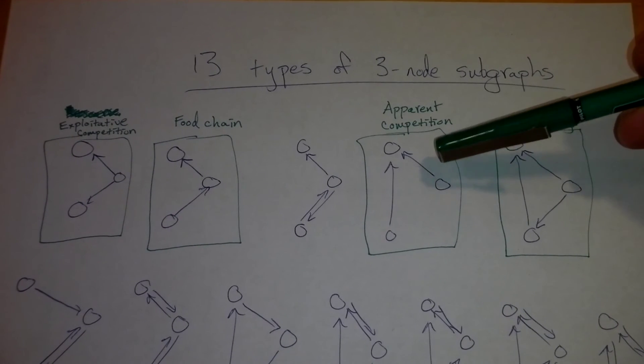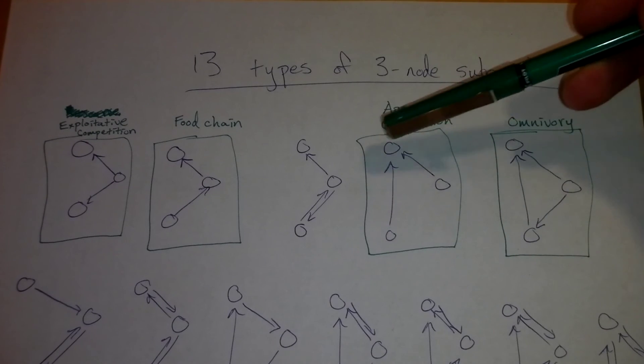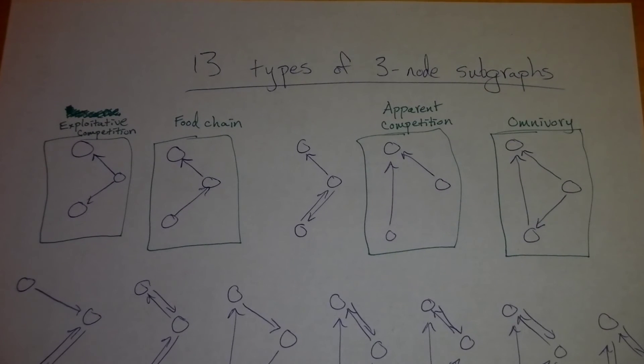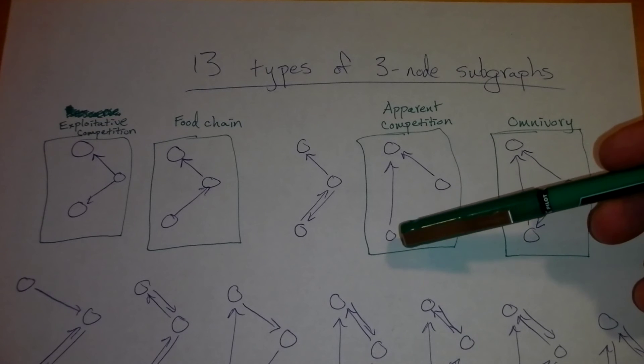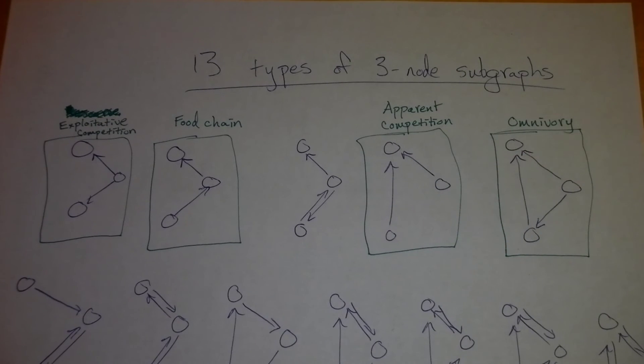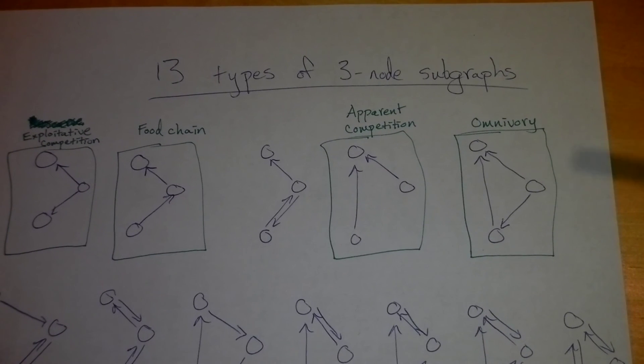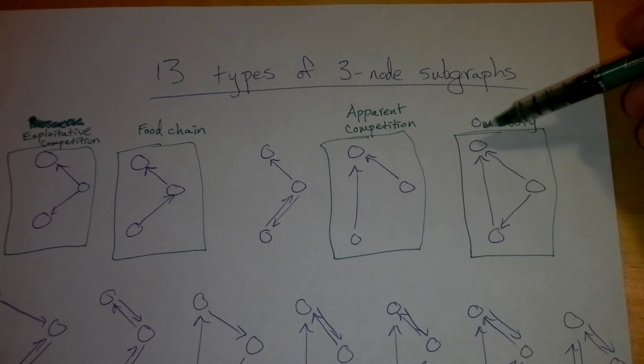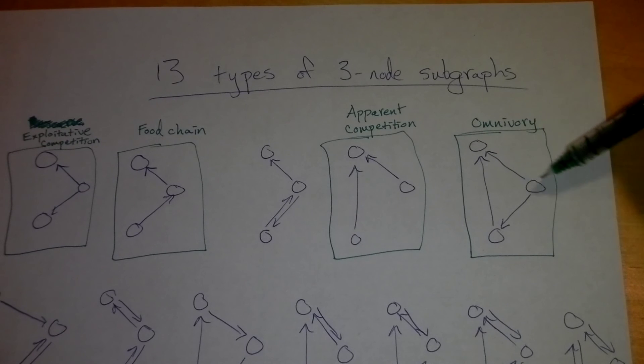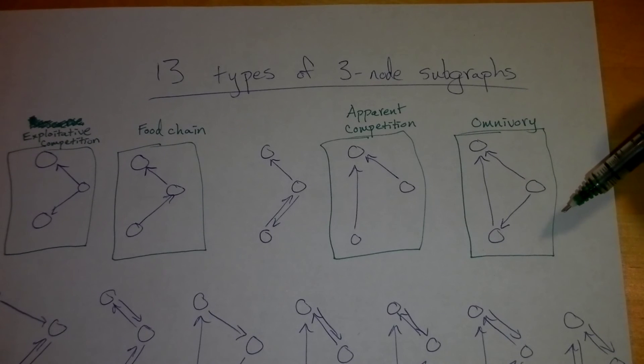With apparent competition, we have two resources and a consumer with those resources. So the resources may compete with one another through that consumer, that shared interaction. And finally, we have omnivory. So we have, for example, we could use this as our resource here. Consumer, predator, but also this predator consumes that same resource. So it's kind of a combination between a food chain and exploitative competition.